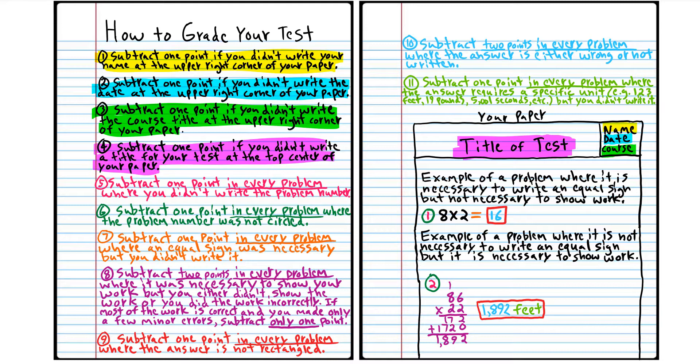And if you scored 70 to 79, that means you know the material, but you have some major issues that you need to work on.